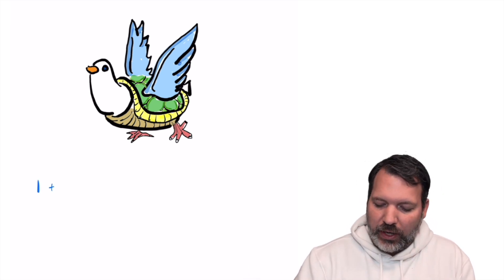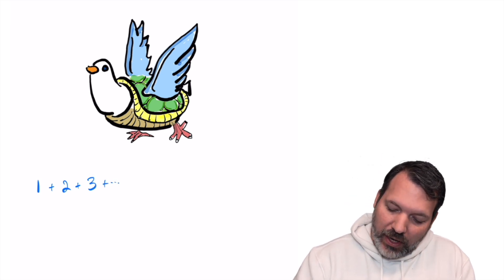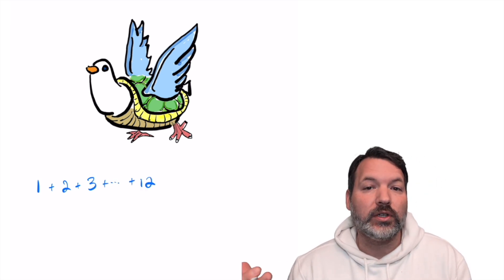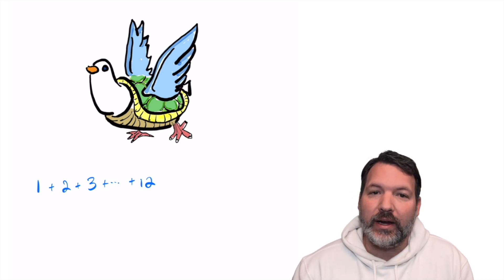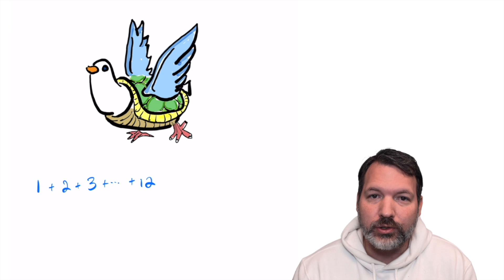So I think to myself, I'm super clever. I can do this. On the first day we get one item. On the second day we get two. Third day we get three. All the way up until the 12th day where we get 12 items. So this is really just the sum of the first 12 integers.